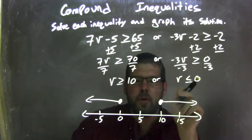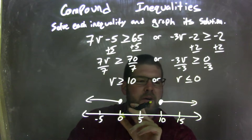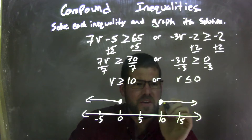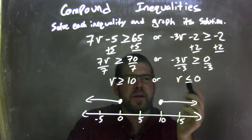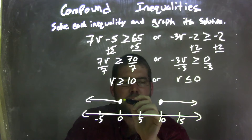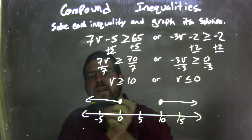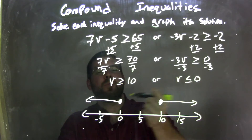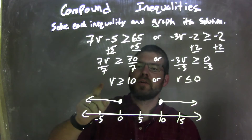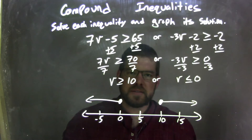So I graph both individually. V is greater than or equal to 10: closed circle at 10, arrow goes to the right. Then V is less than or equal to 0: closed circle at 0 because it's equal to 0, and arrow to the left because V is less than 0. My graph here matches my final answer: V is greater than or equal to 10, or V is less than or equal to 0.